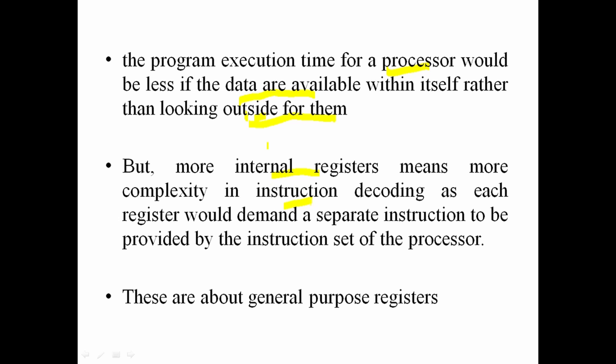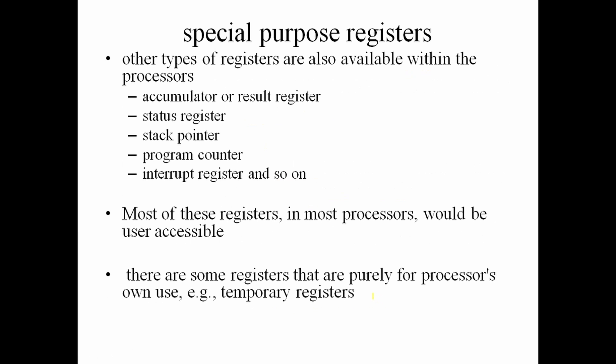There are general purpose registers and special function registers. Examples of general purpose registers include R0, R1, and the accumulator. Special function registers include the Accumulator, Result Registers, Status Registers, Stack Pointer, Program Counter, and Interrupt Registers, among others.